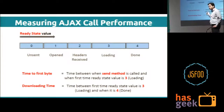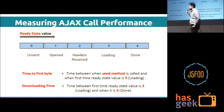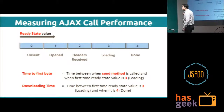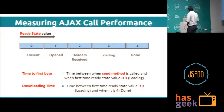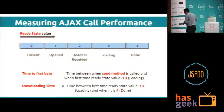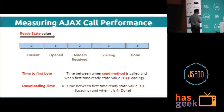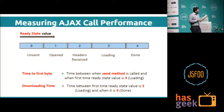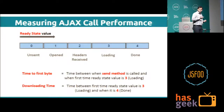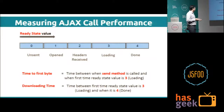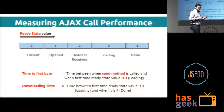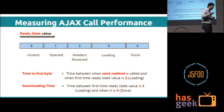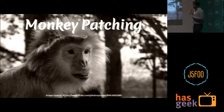There is the ready state value — as AJAX calls proceed, it changes from 0 to 4: unsent, opened, headers received, loading, and done. Here also we can determine time to first byte and downloading time as the end user experiences them. Time between when the send method is called and when the first byte is received — when ready state first turns to 3 — gives time to first byte. Downloading time is the interval from when ready state is first 3 to when it becomes 4.